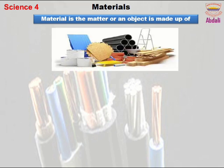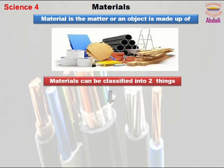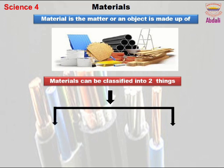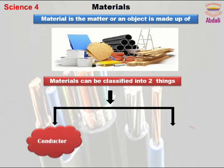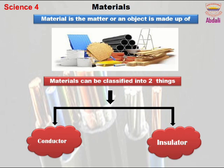Let's start discussing about materials. Materials is the matter that an object is made up of. Material can be classified into two things: conductor and insulator.